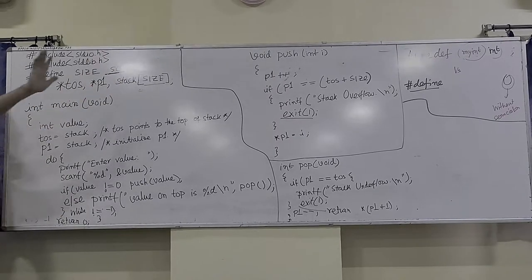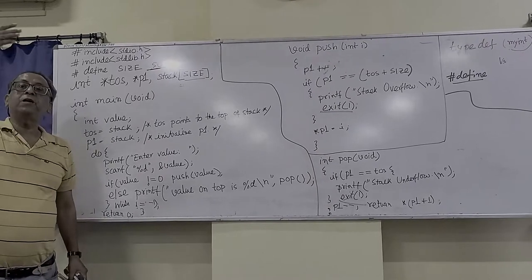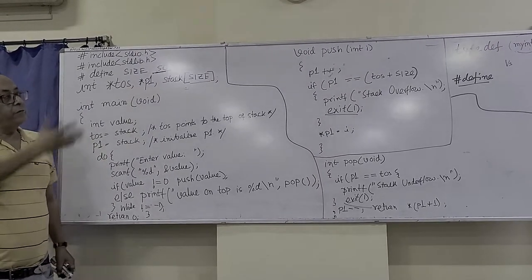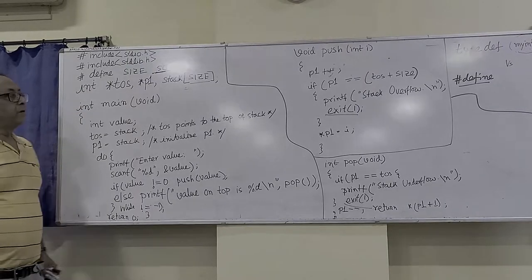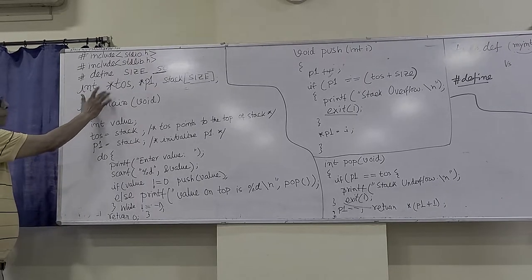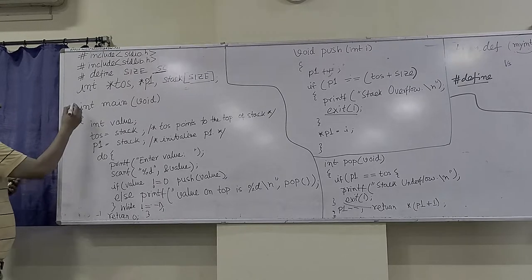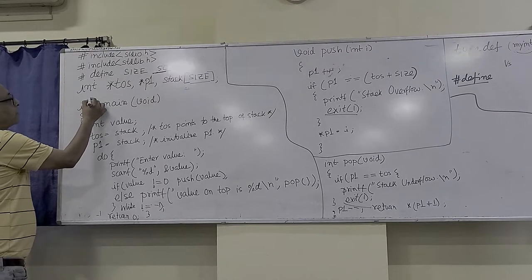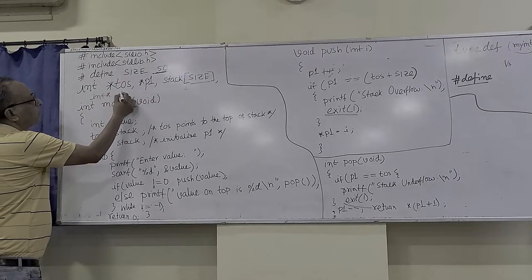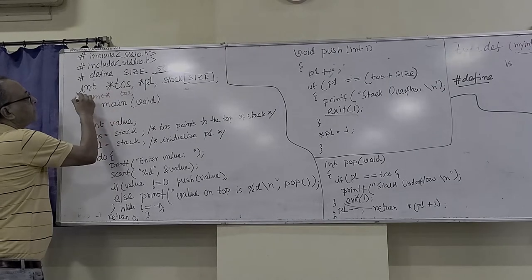Typedef is mainly useful when you want a different definition of your data type, like when you have your own structure. Then you can go for typedef. Now, here the pointer — there is another way you can write a pointer. The typical concept is int* with the top-of-stack variable. Both ways are valid, but one form is preferred.